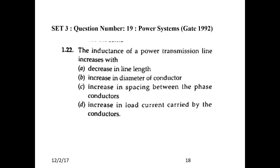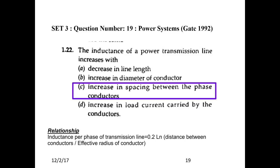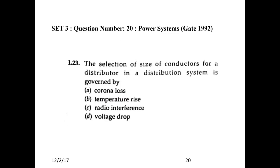Next question: The inductance of the transmission line increases with — the inductance follows the formula: 0.2 × log(distance between conductors / effective radius of conductor). So if the distance between the conductors increases, the inductance increases. Next question: The selection of size of conductor for a distributor in a distribution system is governed by voltage drop, as per IEEE standard, maintaining plus or minus 5 percent of the voltage.